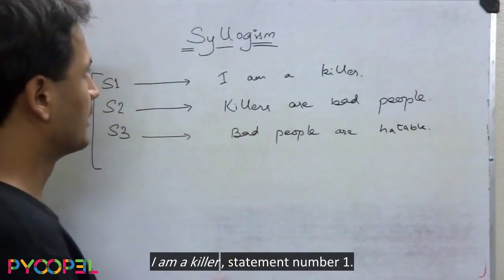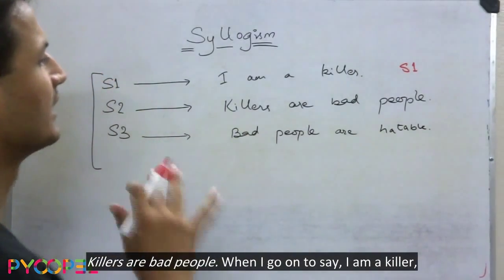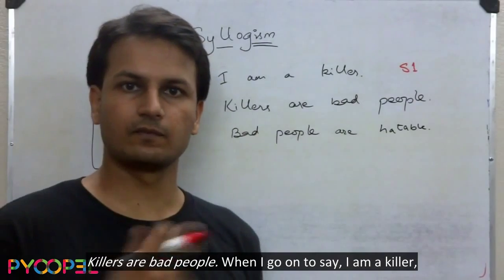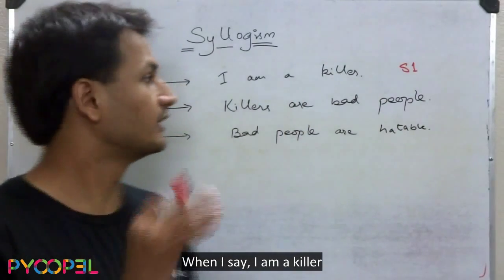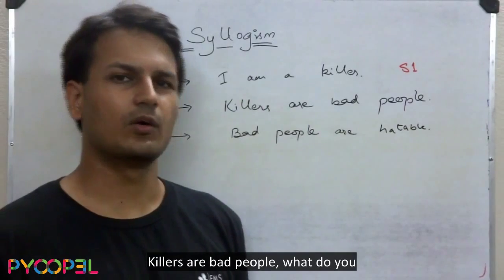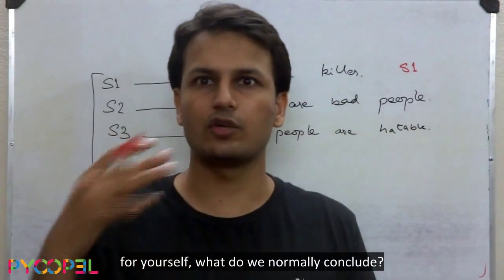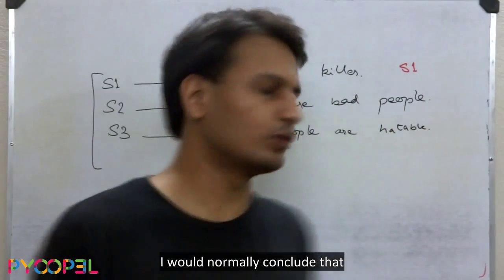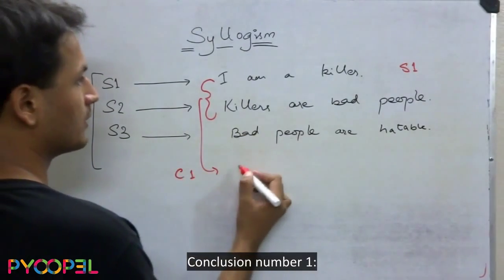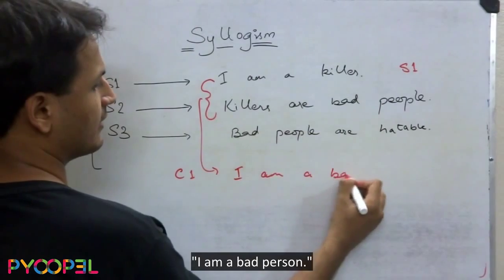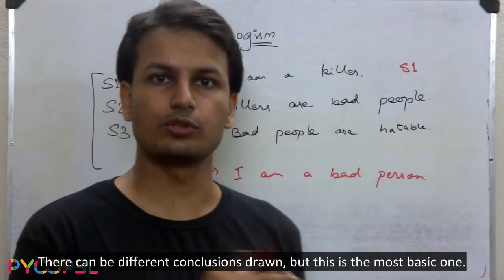So: 'I am a killer' — statement one. Assuming this to be true, and assuming statement two — 'Killers are bad people' — to be true, what do we infer? When I say I am a killer and killers are bad people, what do we normally conclude? Conclusion number one: I am a bad person.